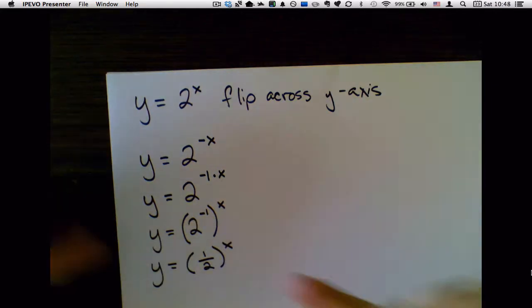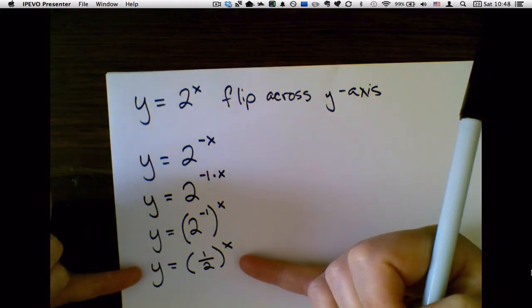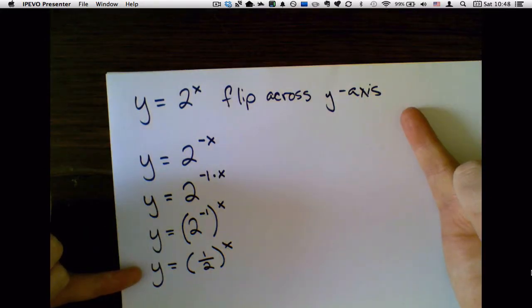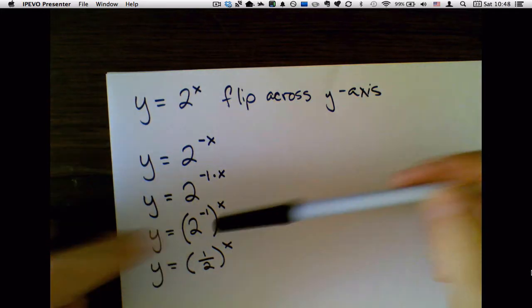So that's why y = 2^x and y = (1/2)^x are mirror images across the y-axis: because 1/2 is 2^(-1).